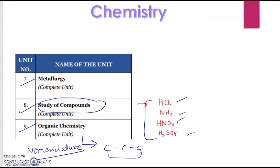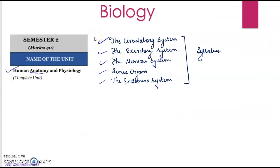Now for Biology, and I've seen people pronouncing it 'biology' so it's incorrect, please correct it. So you have to do human anatomy and physiology. These are the topics that are in syllabus like the circulatory system, the excretory system, the nervous system, sense organs, and endocrine system.